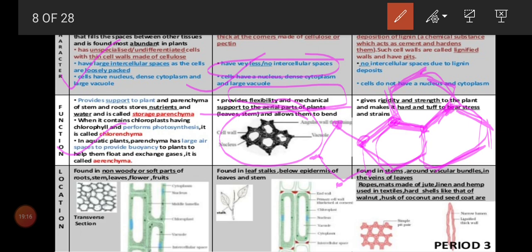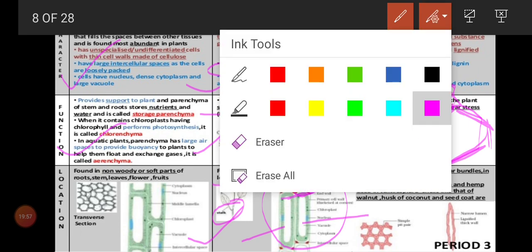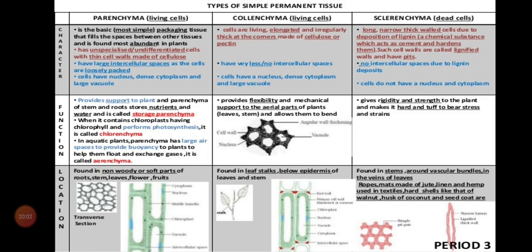Collenchyma is present in the stalk of the leaf and also below the epidermis of leaves and stems. It is not present in the root — there is no need for bending of roots. Normally it is present in leaves and stems. In the longitudinal section of collenchyma, the red color shows the thickening of angles — angular thickening — and the white color is the big vacuole, and green is the cytoplasm with small dots of chloroplast. Collenchyma shares the same characteristics as parenchyma except there are very less intercellular spaces. Its function is to provide flexibility; angular thickening is present; and it is found in leaves and stems.